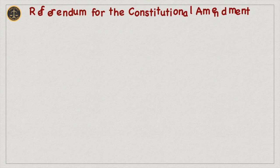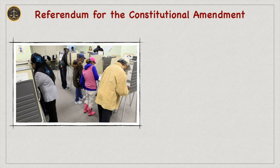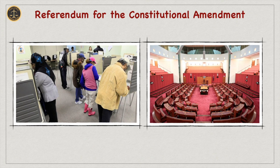Next, Referendum for Constitutional Amendment. If there is a need for constitutional amendment, then a referendum is essentially required. As per the provision of Section 128 of the Constitution, any amendment to the Constitution requires approval through a referendum. The concept of double majority — that is, a majority of electors and a majority of states — must be achieved.